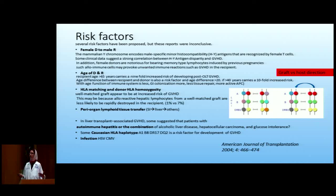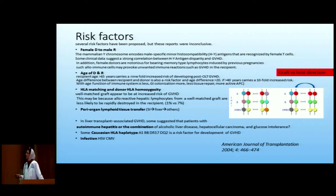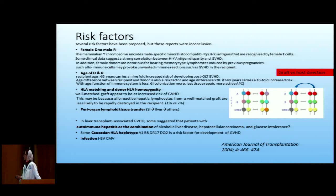Age of the donor and recipient also matters — the older the recipient, the higher the risk, and whenever there's a large age difference there's higher risk for GVHD after solid organ transplant. When the recipient is old, they have a less effective immune system and cannot clear the donor cells. GI colonization is different in older patients, and microbial colonization is very important in GVHD, along with less tissue repair and more active APCs.